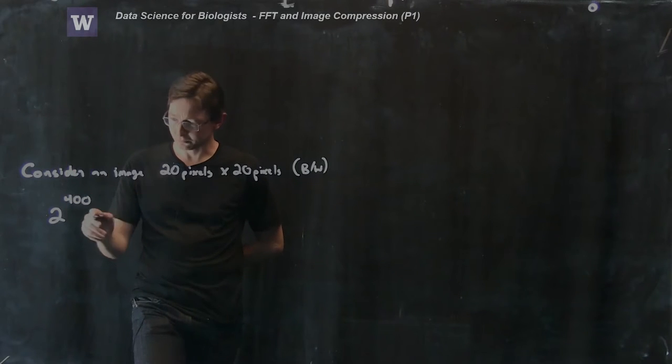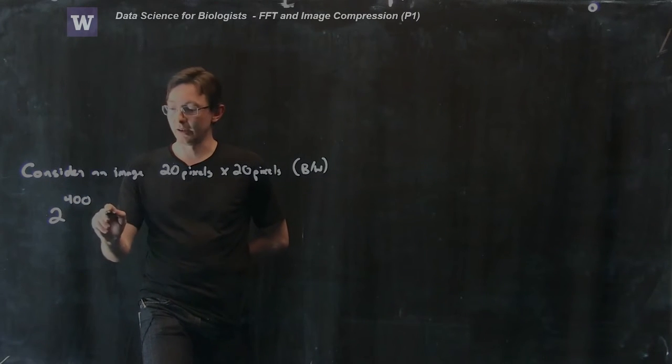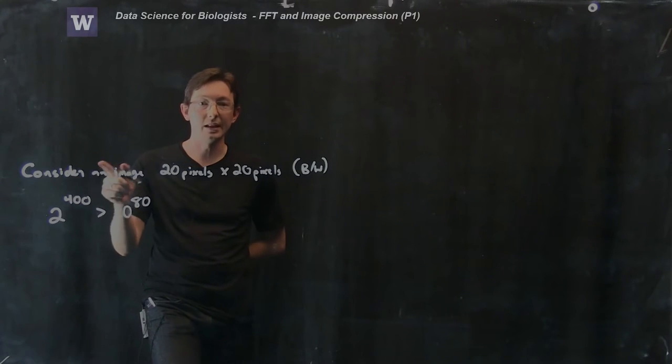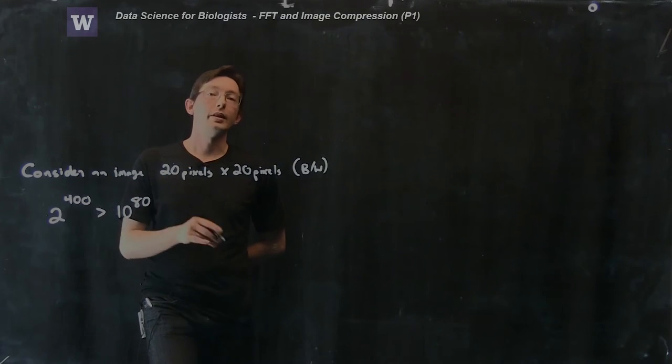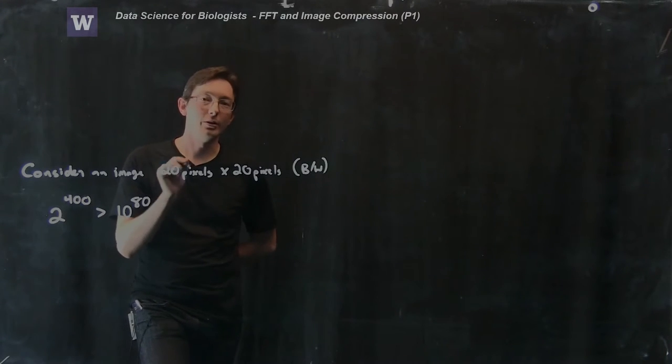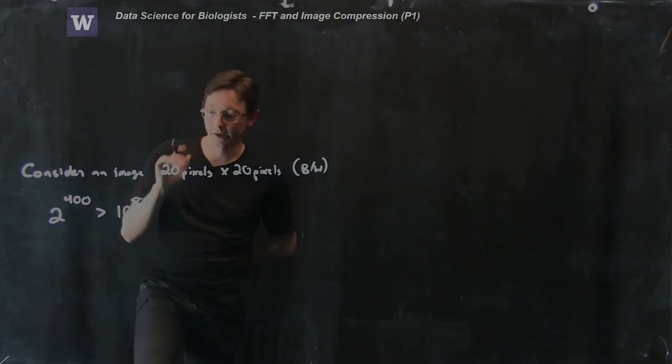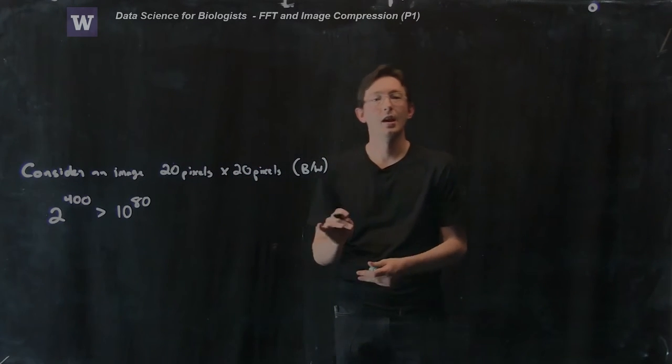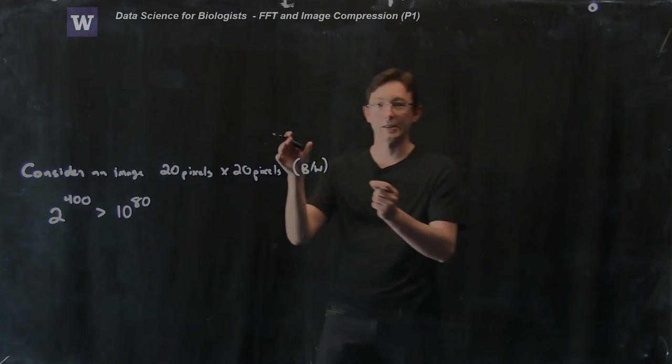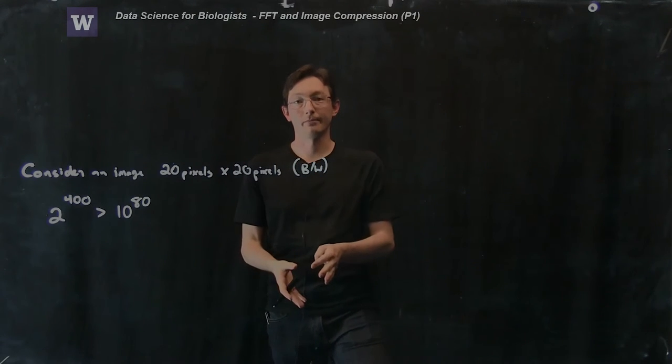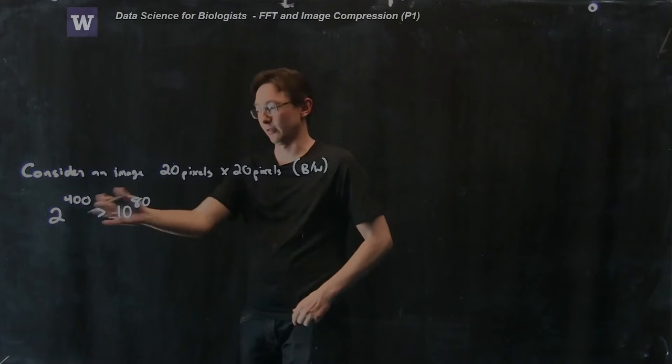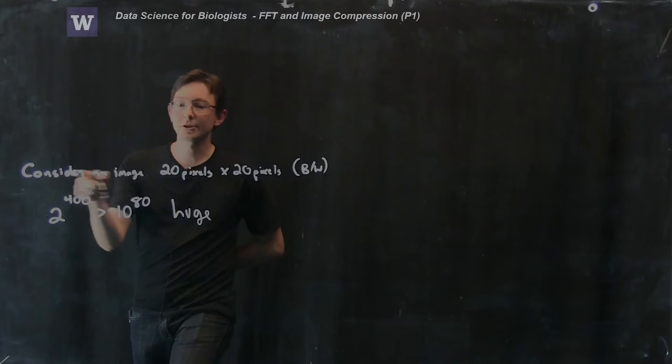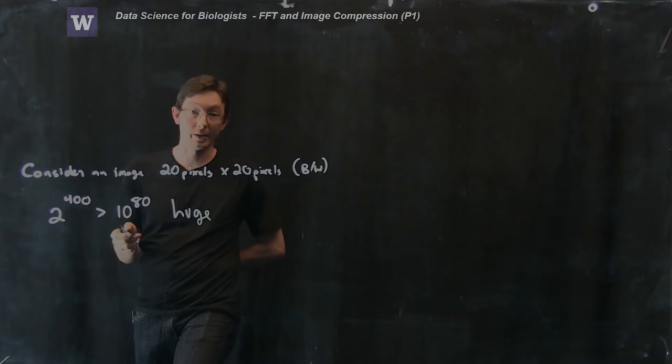This is huge, 2 to the power 400. This is bigger than 10 to the power 80. This is more of these little dinky images than there are nucleons in the known universe. Let me say that again. There are more dinky little 20 pixel by 20 pixel black and white images than there are nucleus cores in the entire known universe. That's astronomical, the definition of astronomical. So this is huge. And these are just dinky little 20 pixel by 20 pixel images.